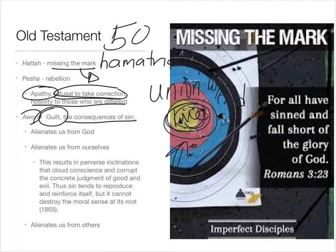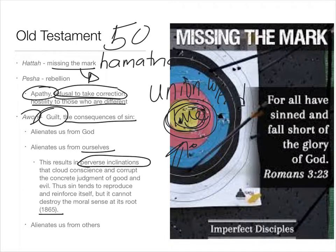These are the three consequences of sin. First, sin alienates us from God. If the target is union with God, sin brings us away from God. The next consequence is it alienates us from ourselves. This results, as the catechism says, in perverse inclinations that cloud conscience and corrupt the concrete judgment of good and evil. Thus, sin tends to reproduce and reinforce itself, but it cannot destroy the moral sense — that is synderesis.